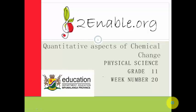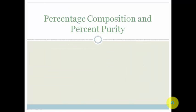Good day grade 11. Welcome to your second lesson on quantitative aspects of chemical change in week 20. In this lesson we're going to do two things: learn about percentage composition and percent purity. Watch the video where they explain percentage composition, then go through two examples where I teach you how to do percent purity.